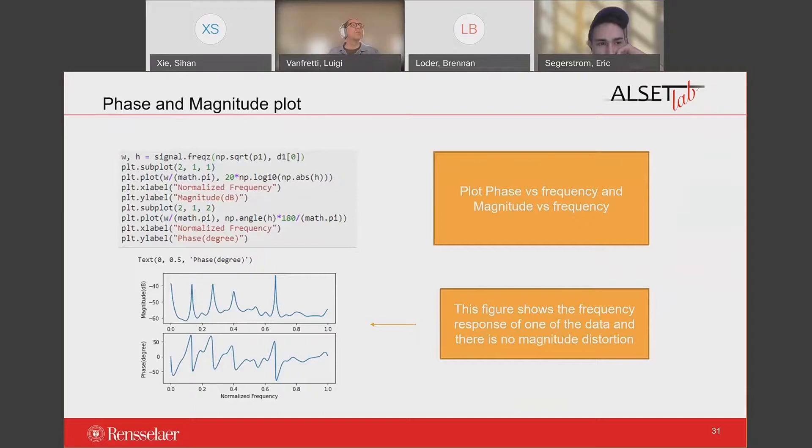After we get these two vectors, we can perform the phase and the magnitude plot as shown by this graph. We can see that there is no magnitude distortion in this plot, which is the ideal situation.